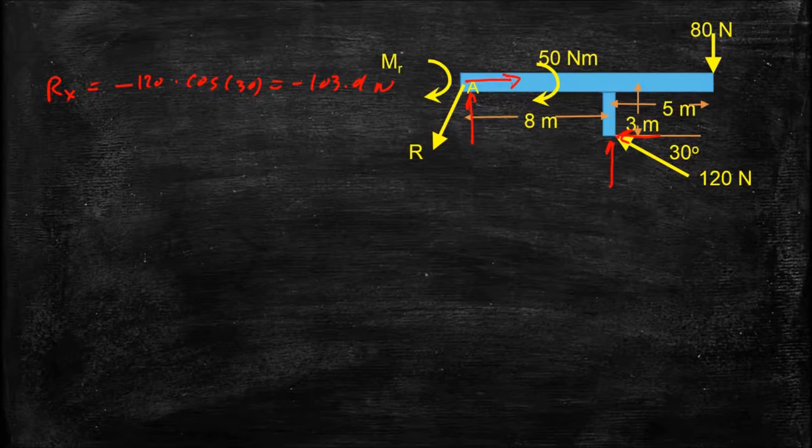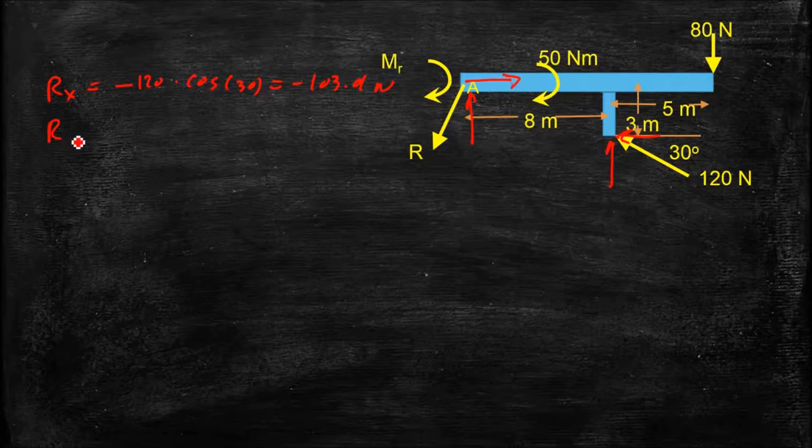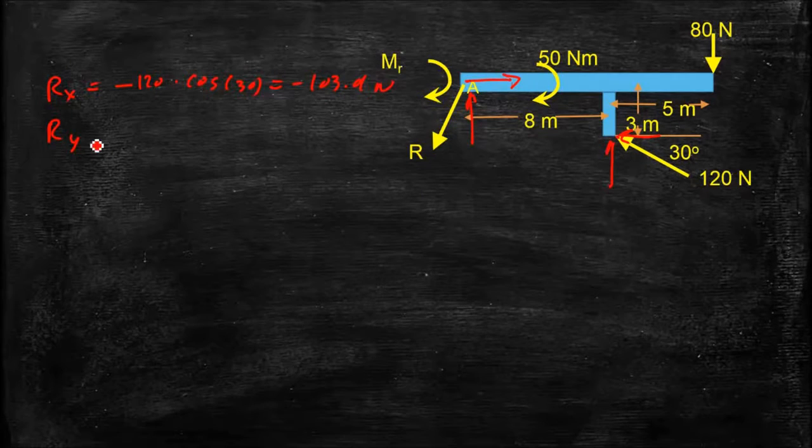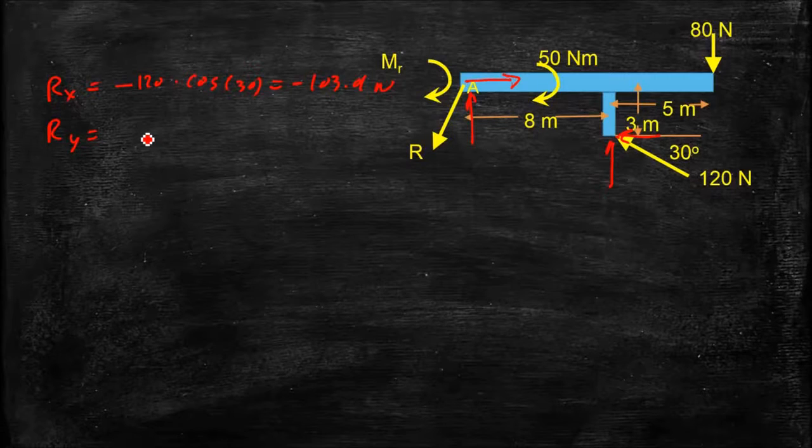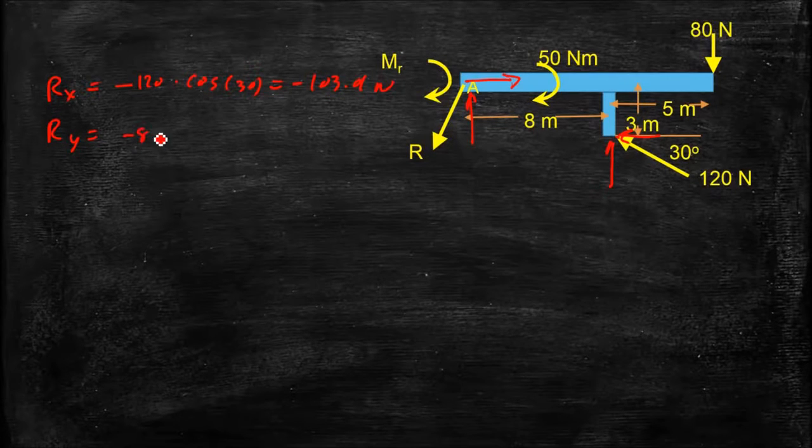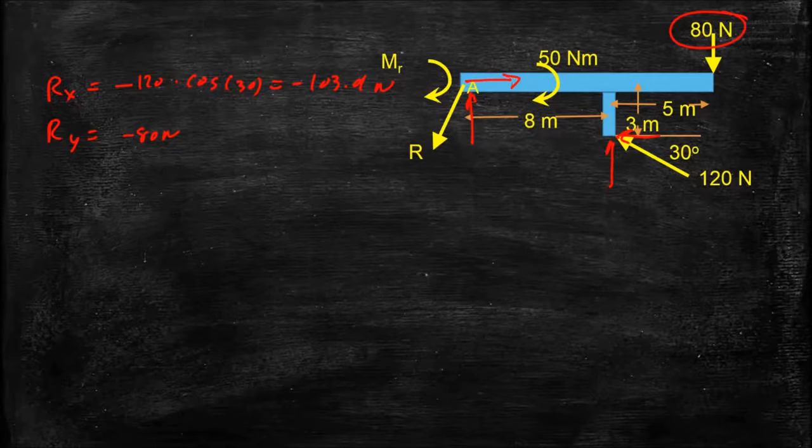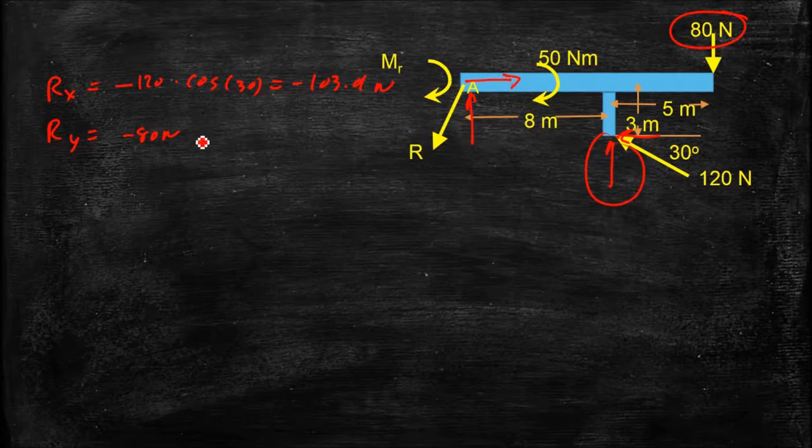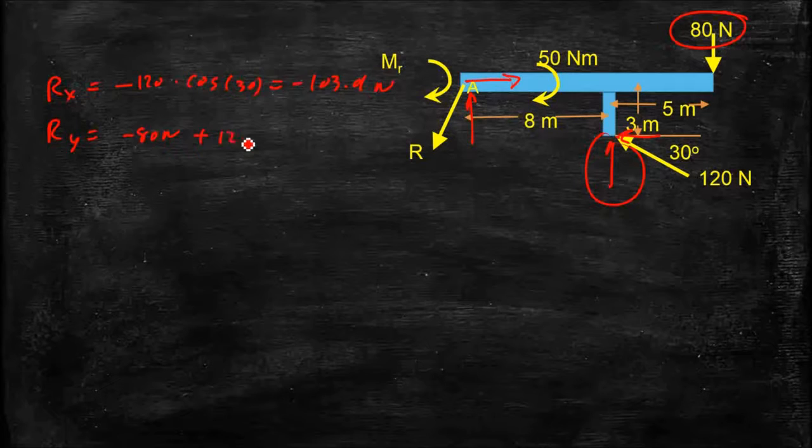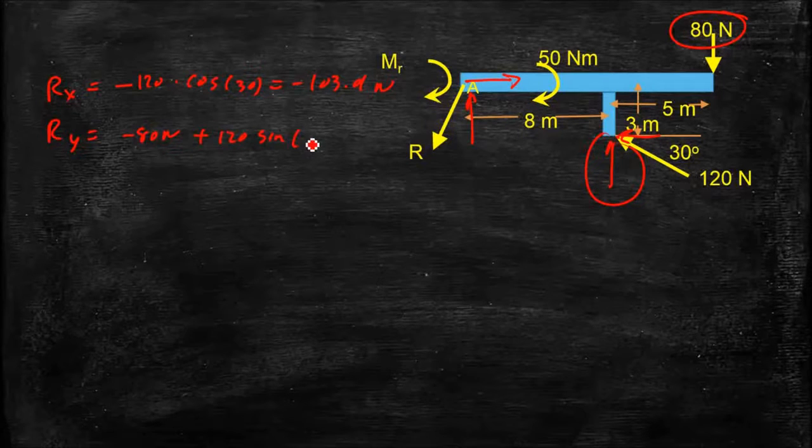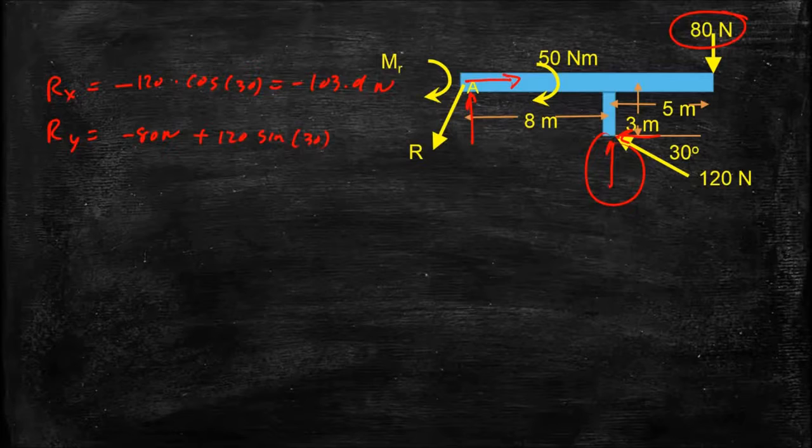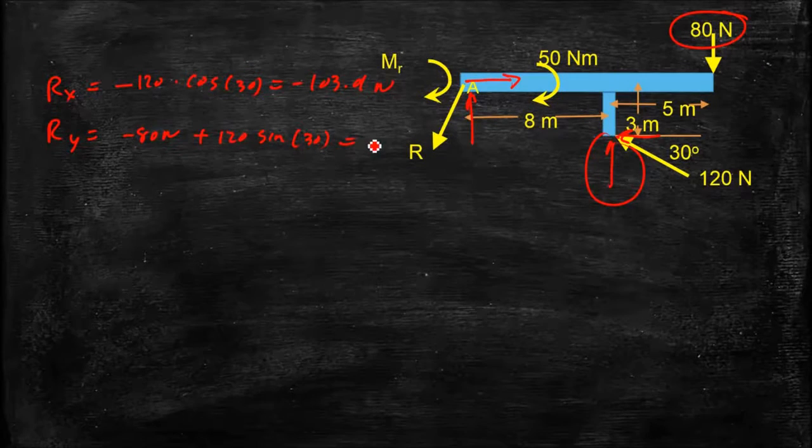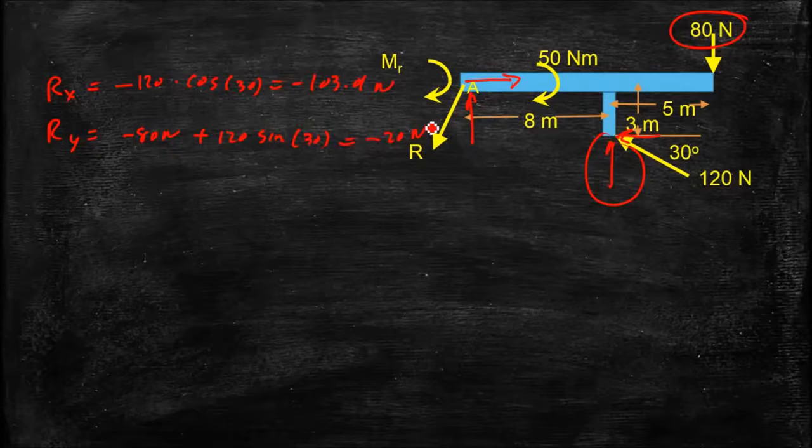And in the Y direction, my resultant in the Y direction is just the sum of all the forces in the Y direction. And that's equal to a minus 80 Newtons, that one. The Y component of this force plus 120 sine of 30. And that's all of those. And that is equal to a net of minus 20 Newtons.